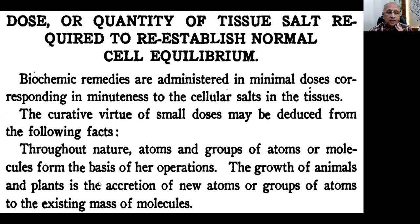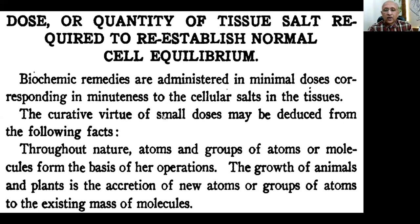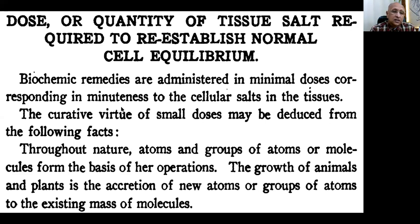To explain why minimum quantity is required, he gives numerous examples from nature. Throughout nature, atoms and groups of atoms — molecules — form the basis of our operations. The growth of animals and plants is the accretion of new atoms or groups of atoms to the existing mass of molecules. If you look at how plants develop, the ingredients required to develop a plant are so minimal. For a human being too, only a very small quantity is required; it is not required in large material amounts.